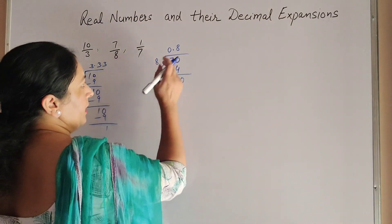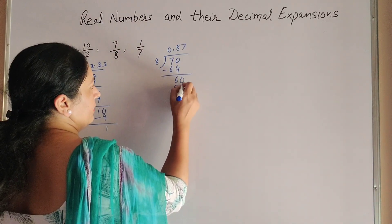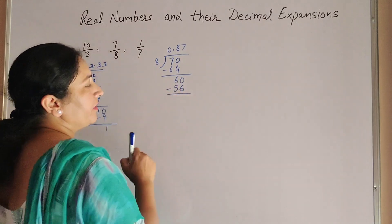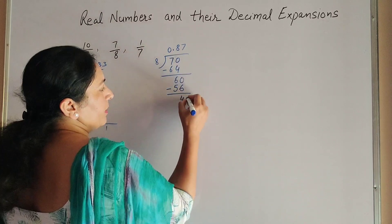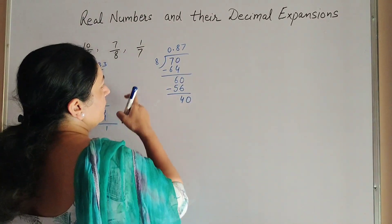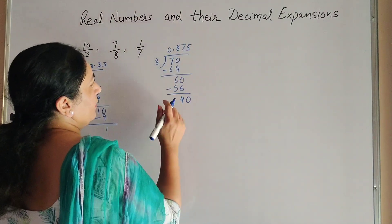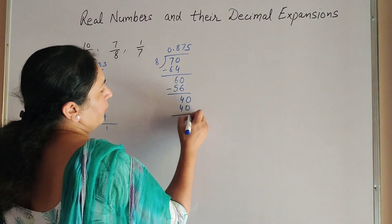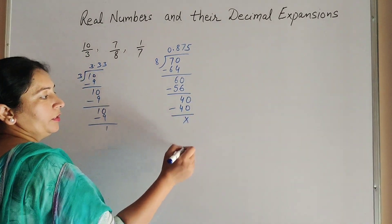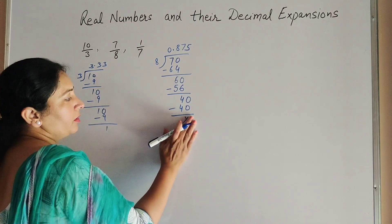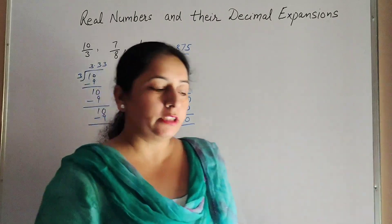There is a decimal so we add 0. Now 60 divided by 8: 7 eights are 56. 60 minus 56 gives 4. We add 0 — since we already placed the decimal. Now 8 fives are 40: 5 eights are 40. 40 minus 40 gives 0. The remainder is 0, so the division terminates.